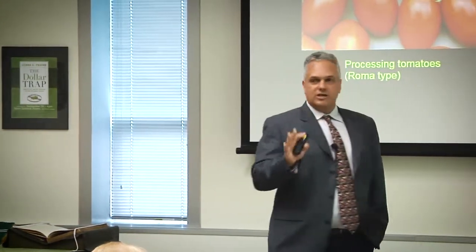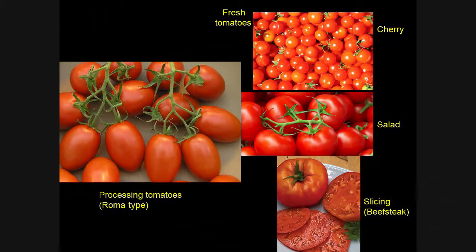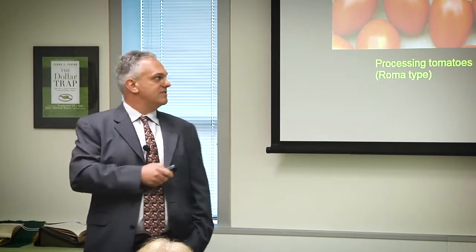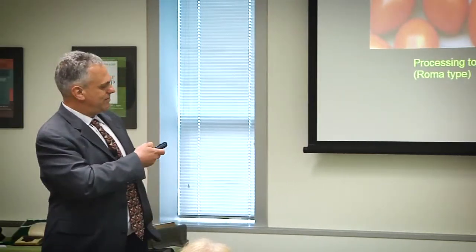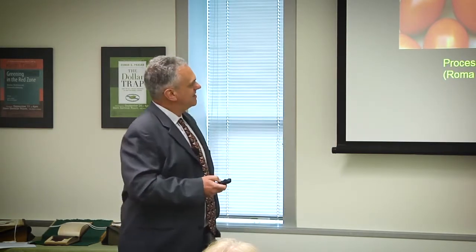There are two general types of tomatoes. You're probably familiar with processing — typically the Roma types of tomatoes — and fresh market: the small cherries, the intermediate salads, the slicing types. Although you've probably noticed, if you've been shopping for more than 10 years or so, that we now see Romas in the supermarket. And that's because the fresh varieties have been reducing in quality to where these — typically not considered good fresh market varieties — can compete, because it's easier to compete with some of the poor quality, high production varieties that are out there today.